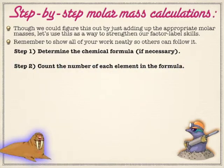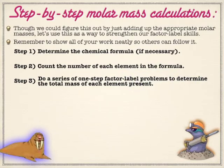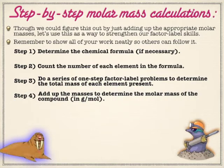Figure out how many of each element we have. We're going to go under the assumption that we have one mole of this substance, no matter how much we actually have. Given one mole of the substance, the subscripts will equal the moles of each subspecies. Then we're going to do a series of one-step factor label problems to determine the grams of each, and then we're just going to total up the grams. Given the assumption that we have one mole of this stuff, that entire gram calculation will be the grams per one mole of the substance.